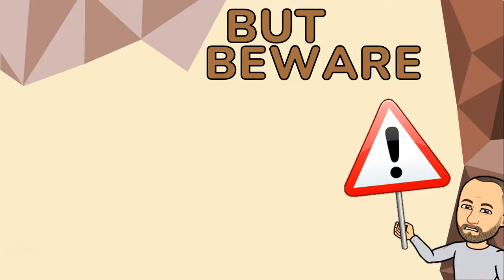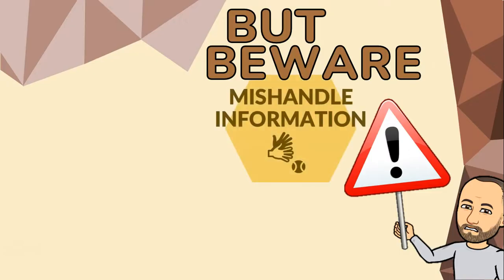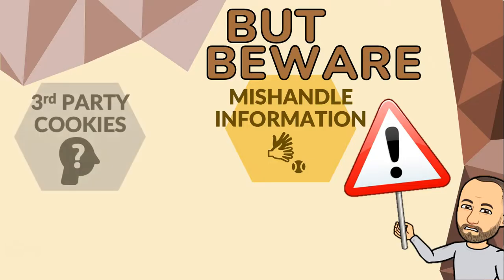Website operators themselves could mishandle the information in your cookies by not having them properly secured, not encrypting the information correctly, or making it hard to decipher. Third-party cookies can pose a danger because they can track your browser's behavior across multiple websites, potentially collecting sensitive information. They can also be used to deliver targeted ads which you may not want, or these ads can be malicious.